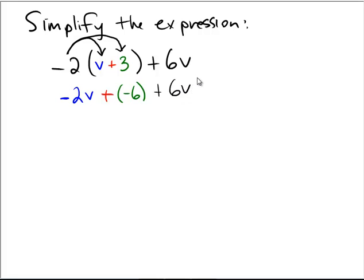Now at this stage, we have two terms that can be combined together. We have a negative 2v and we have a plus 6v. So in order to add those quantities together,